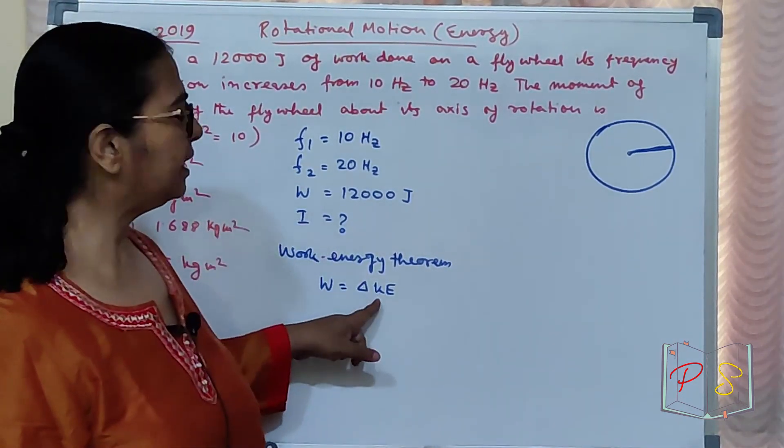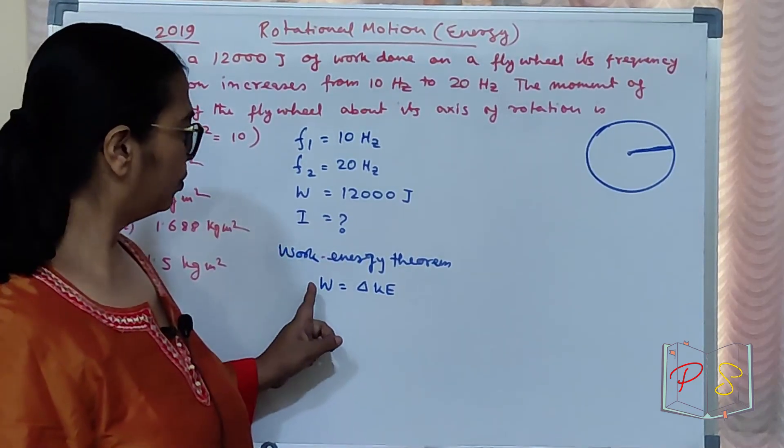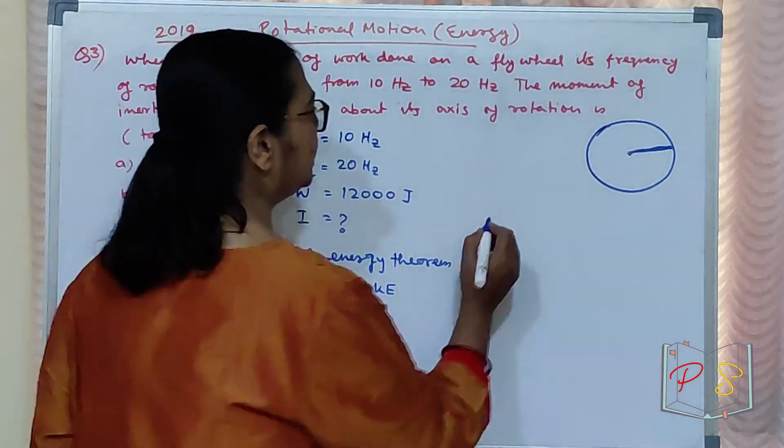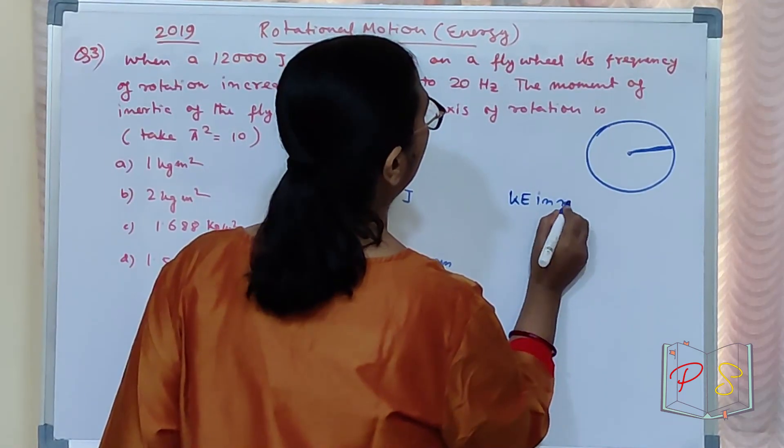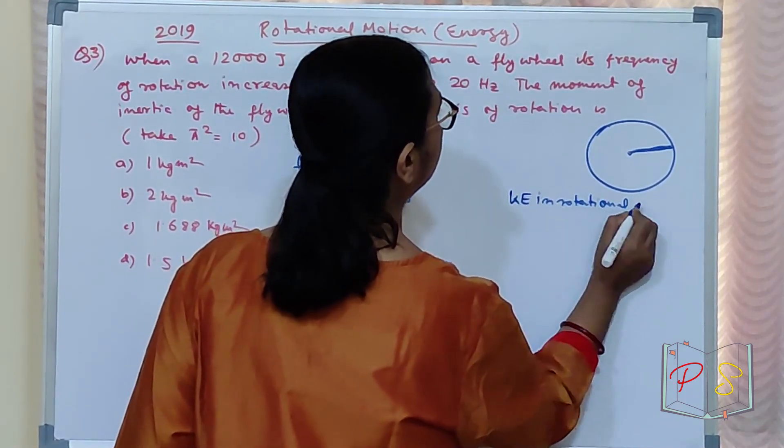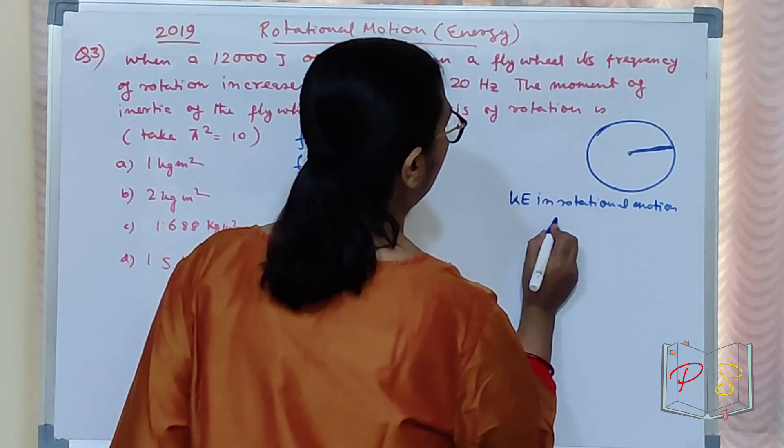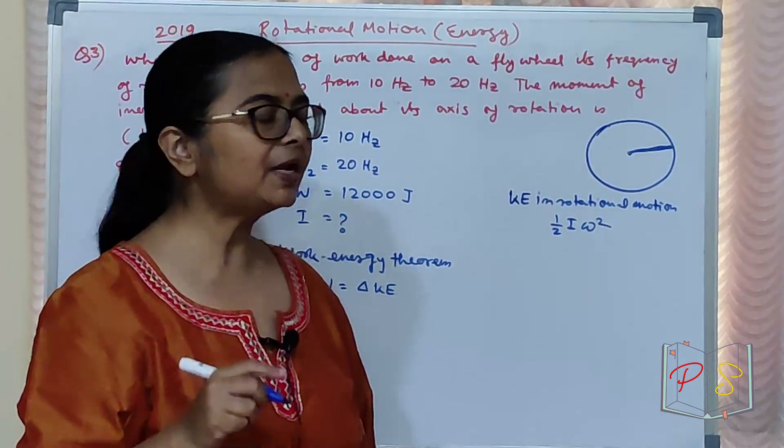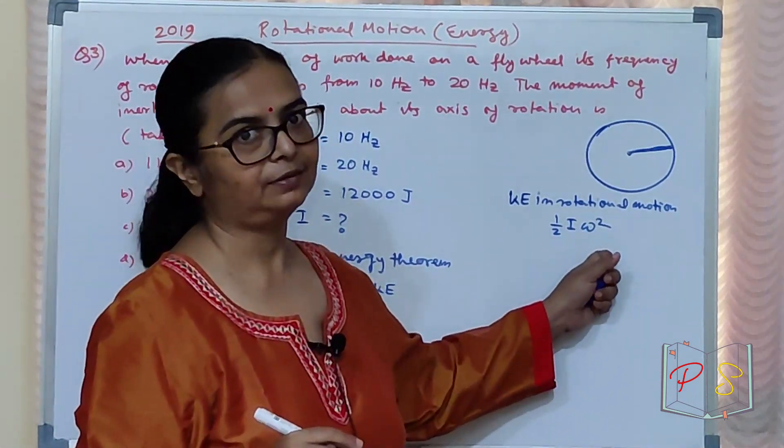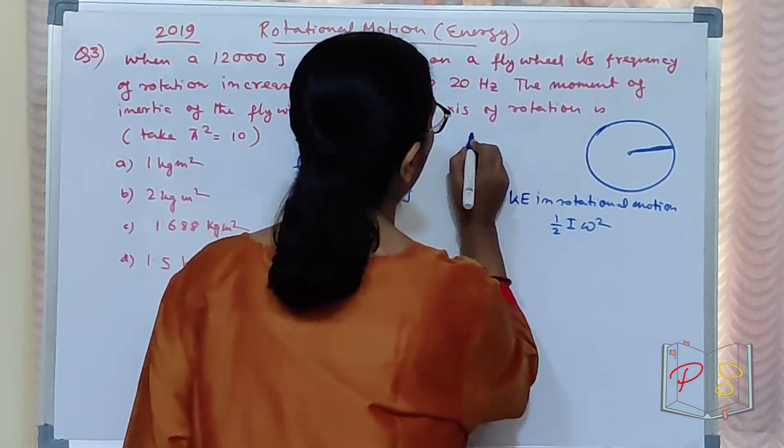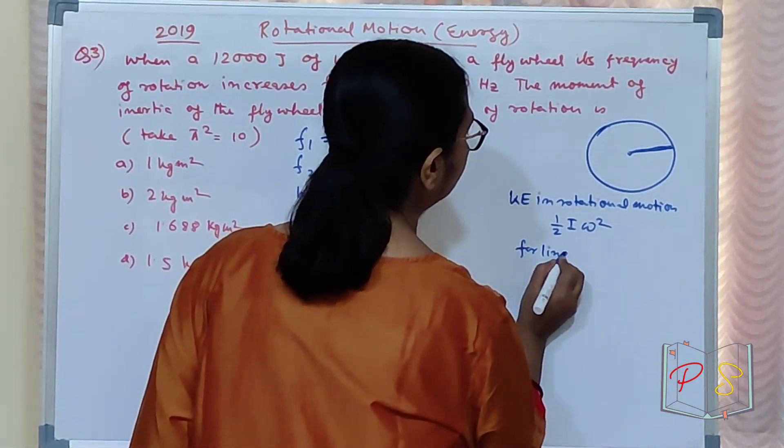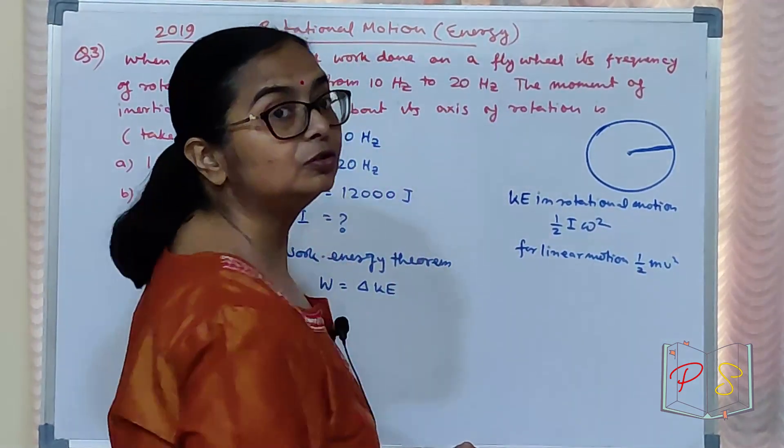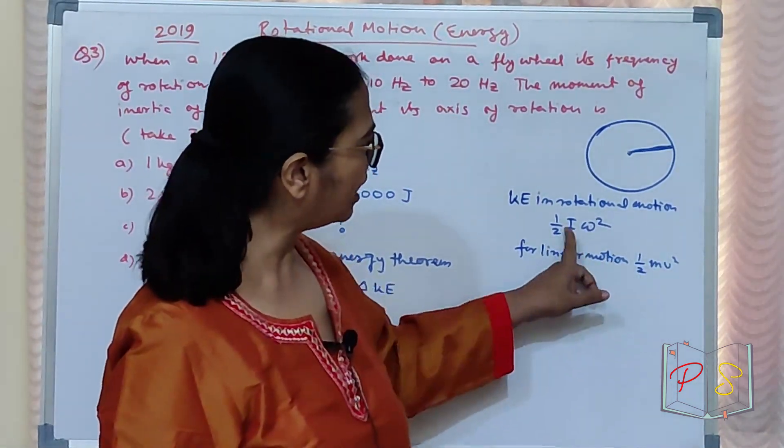Frequency change hua. Toh kinetic energy change hua. Aapko work de diya. Kinetic energy ka formula lagayenge. Rotational motion mein, kinetic energy in rotational motion kya hai? Half I omega square. Correct? Linear mein kya hota hai? Half M v square. Half M v square. Linear for linear motion. Half M v square. Toh rotational ki half I omega square.